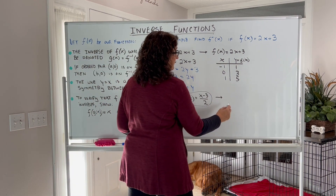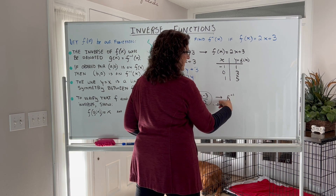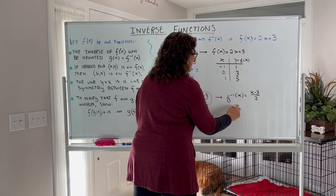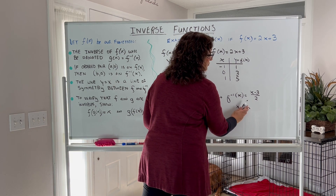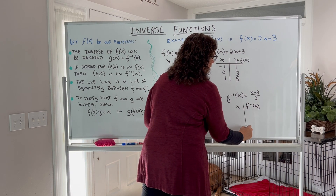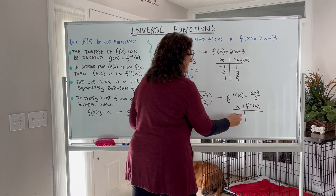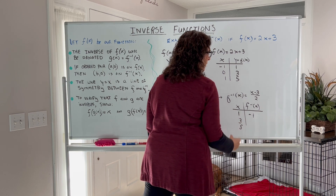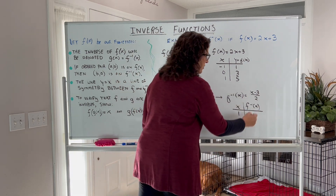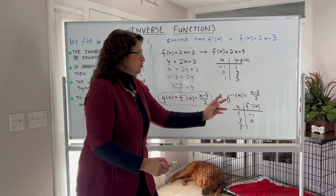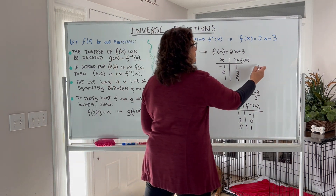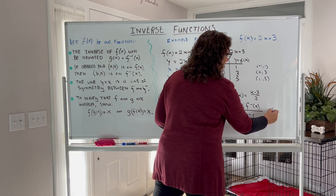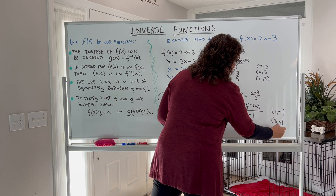Now let's plug some points into the inverse, f inverse of x equals x minus 3 over 2. We'll plug in x values 1, 3, and 5. When x equals 1: 1 minus 3 is negative 2, divided by 2 is negative 1. When x equals 3: 3 minus 3 is 0, divided by 2 is 0. When x equals 5: 5 minus 3 is 2, divided by 2 is 1. So the inverse gives points (1, −1), (3, 0), and (5, 1).